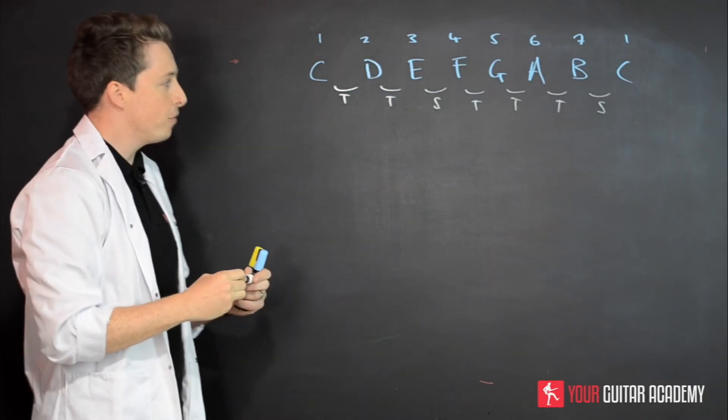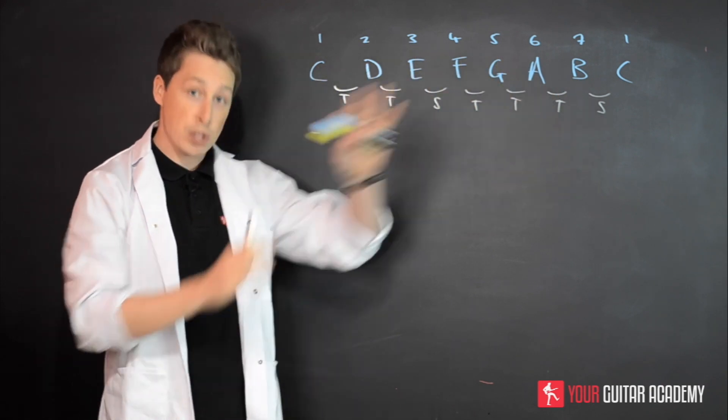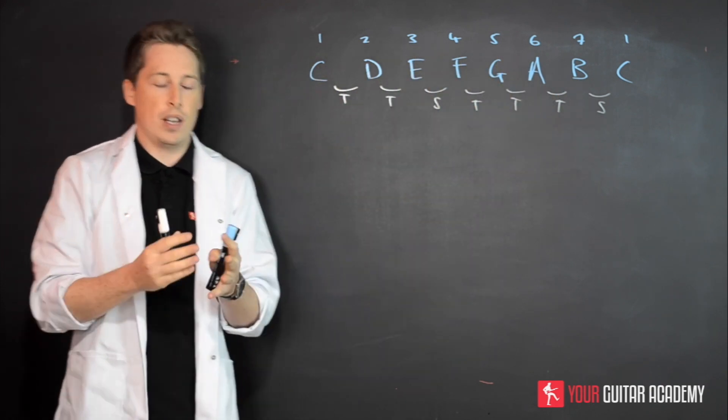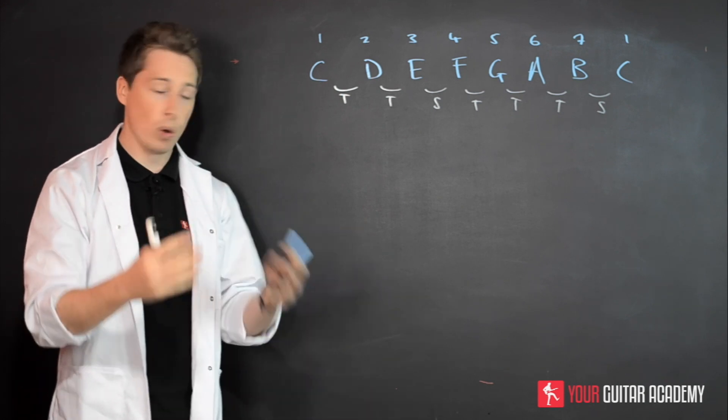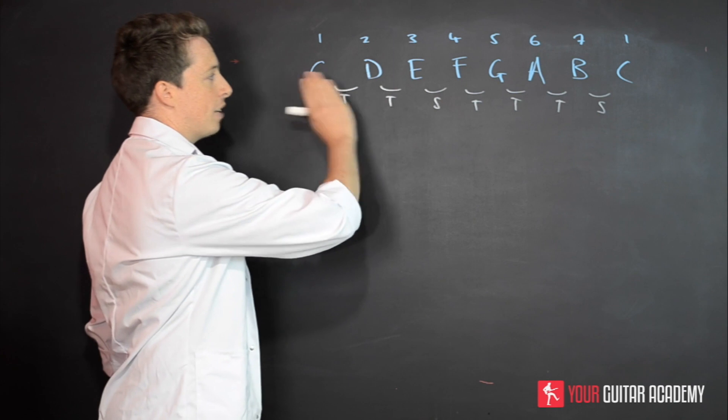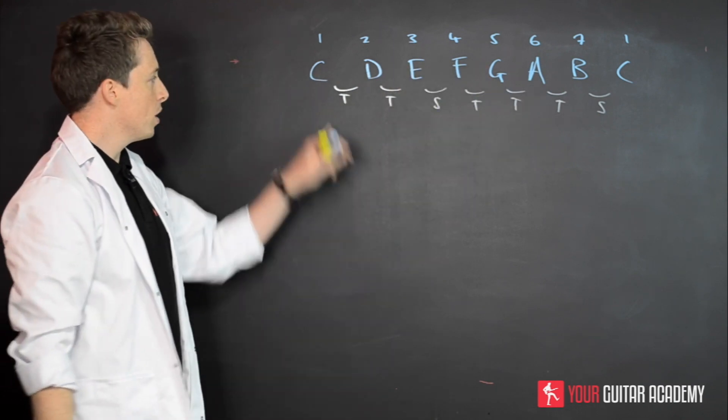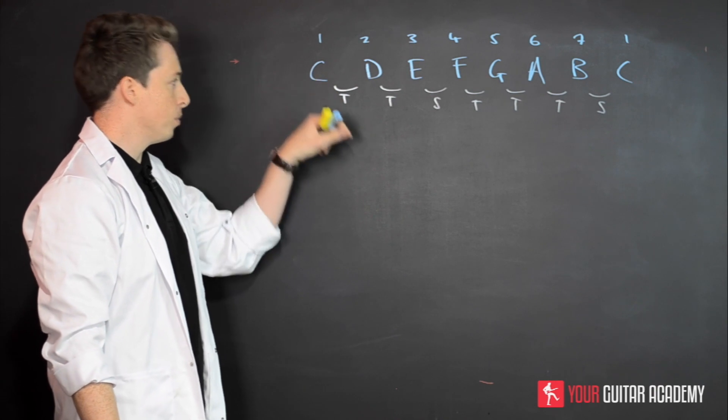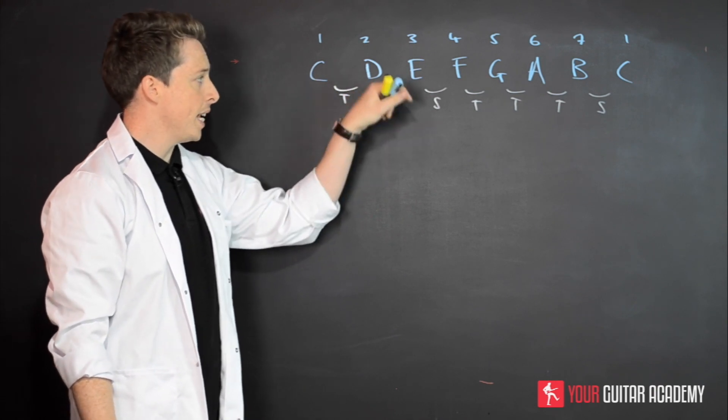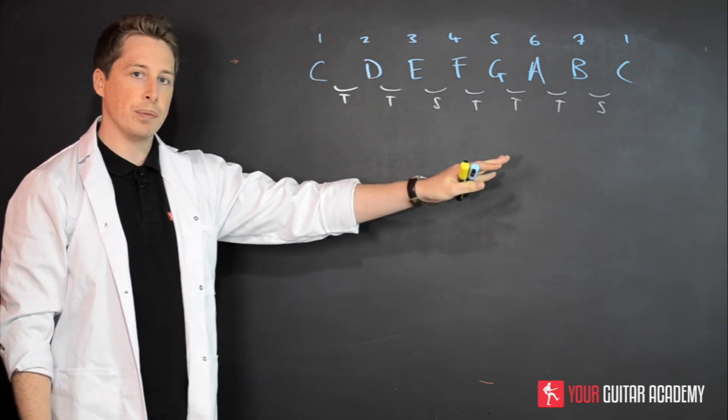Now if you remember when we first did this, the way we managed to work out the scale was using this formula: tone, tone, semitone, tone, tone, tone, and semitone. And that formula gave us from the 12 notes of the Western notes that are usable, so C, C sharp, D, D sharp, E, all of them. That formula would give us the correct scale when you start from the letter you want. So in this instance, a tone up from C is D, a tone up from D is E, and so on and so forth.